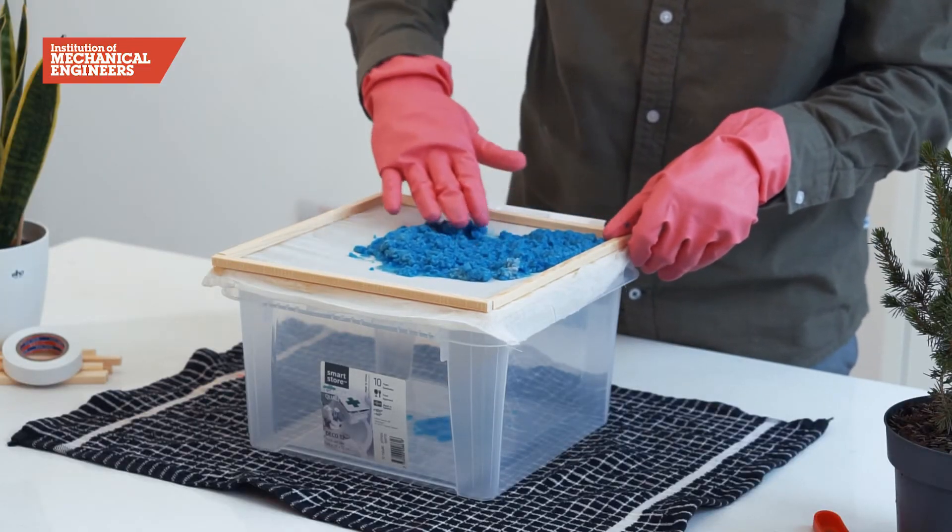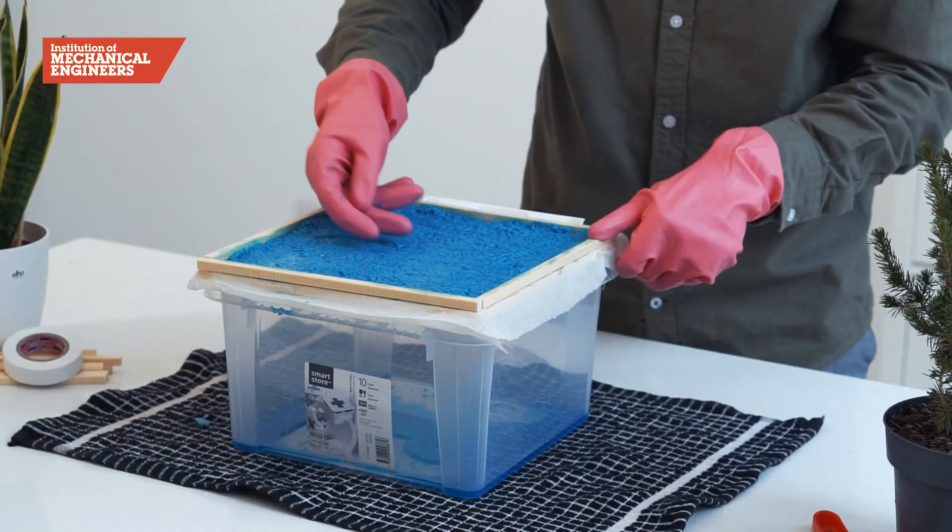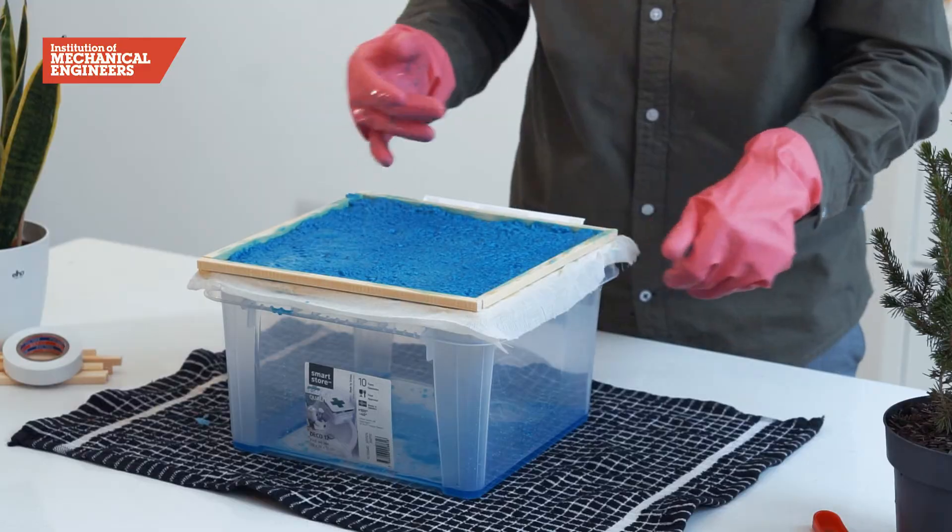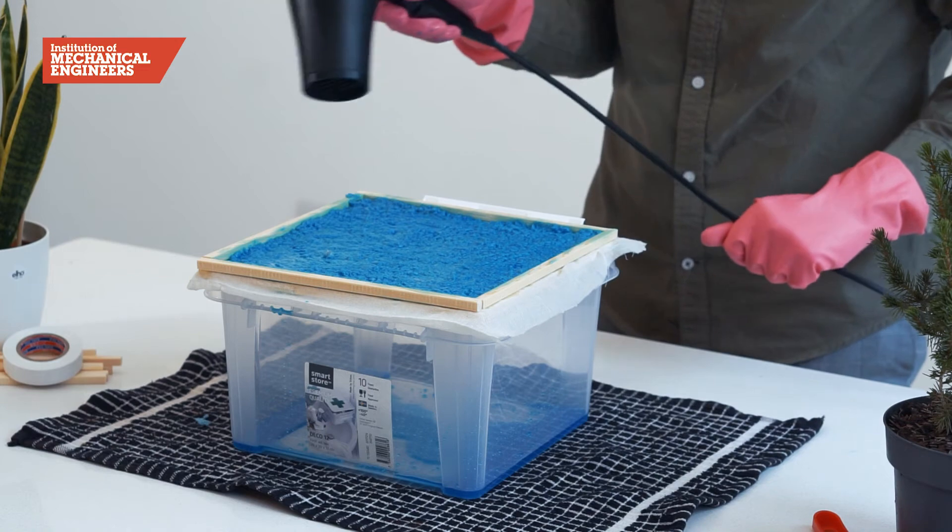As the last of the water evaporates from the pulp the cellulose fibers join together once more creating a solid piece of paper. You can speed up the evaporation process by leaving your paper in a warm place to dry or using a hairdryer.